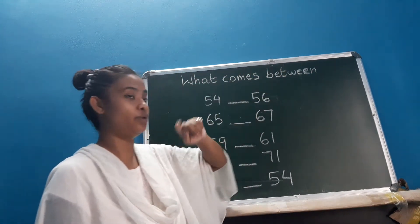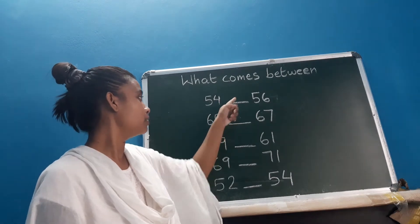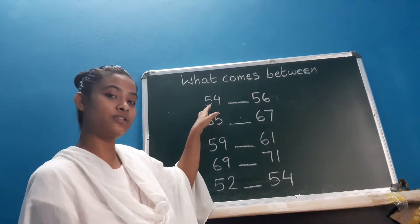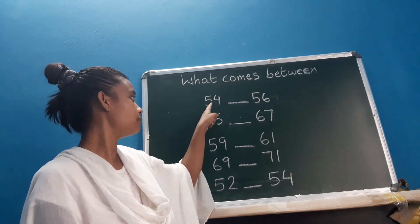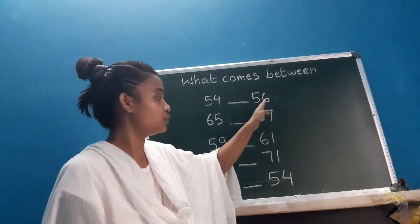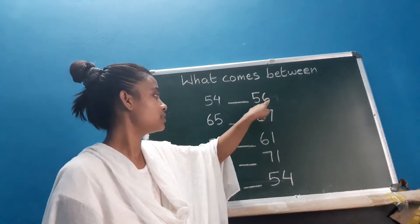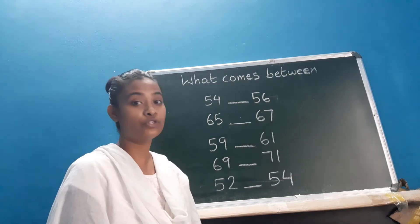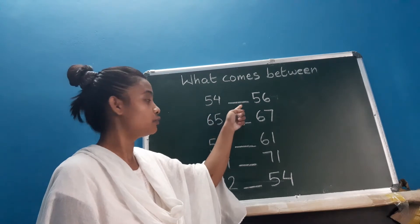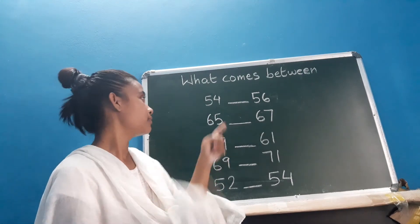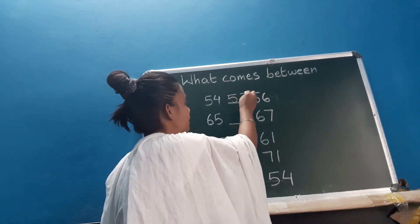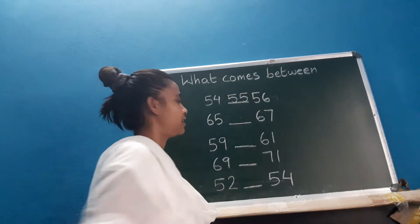What comes between? Which number will come here on the blank space? So first, which number is this, children? This is 54 and there is a blank, and after that which number is this? 56. So which number is missing, children? After 54, which number will come here? 55.